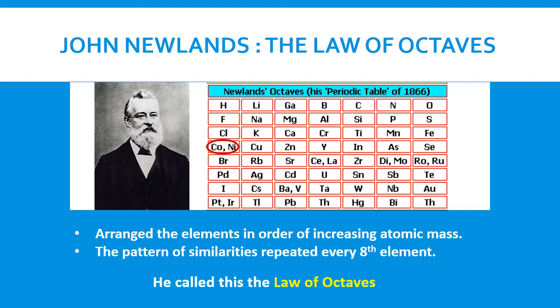Newlands' idea worked perfectly for elements 3 to 18. There were issues with this because he used only the known elements at the time, and because many elements were not discovered, there were some issues with his periodic table. His idea was not taken seriously because of the placement of several elements. For example, cobalt and nickel appear in the same column as chlorine. Iron and oxygen and sulfur appear in the same column. Copper was found in the same column as lithium, sodium, and potassium.